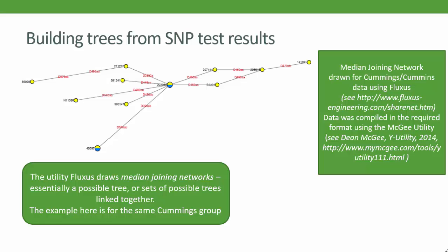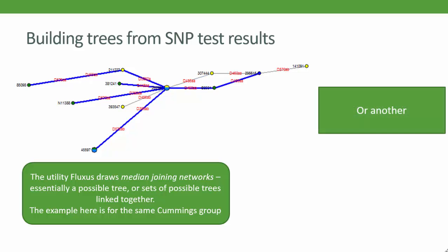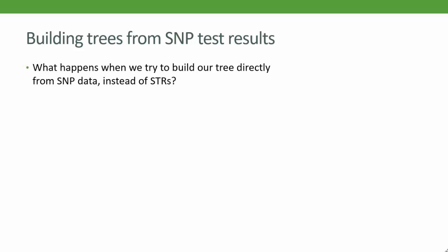In fact, there are several possible trees that could be compatible with this network. Here is one possible tree picked out in blue. And here is another one. So we're getting somewhere, but most project admins will understand the frustrations of trying to create a logical tree from an STR matrix. So can SNPs get us past that and help us create more definitive trees for our surname lineages?